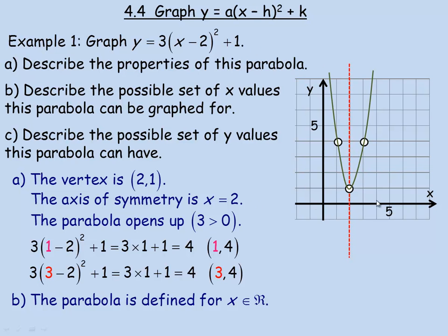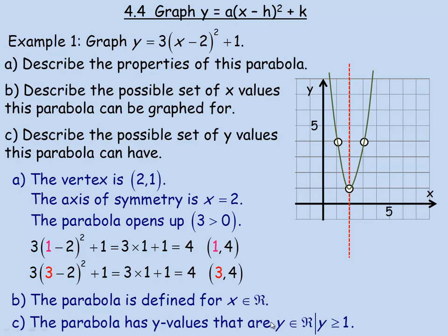The parabola continues to go upward forever, and it also keeps going out to the right and left. That means you can put any x-value in place of x in the function — any real number, whole number, decimal, radical, or fraction. So the parabola is defined for all real numbers; x is a member of the set of real numbers. For any parabola that opens up or down, there's either a minimum or maximum point. Here we have a minimum: the y-value there is 1, since the vertex is at (2, 1). Every other y-value is bigger than 1, so the range is: y is a member of the real numbers such that y is greater than or equal to 1.